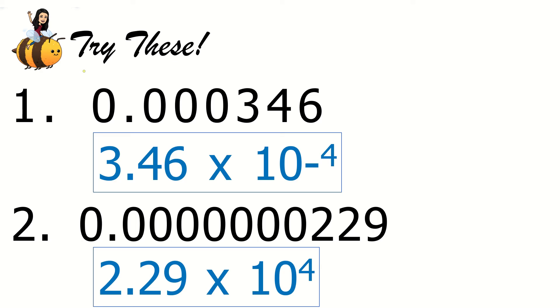Because here, it's correct that it's 2.29 and it's correct that your base is 10, but your exponent is not anymore 4. Your exponent must be 1, 2, 3, 4, 5, 6, 7, 8. So it must be negative 8. Instead of 4, you are going to write down negative 8 as your exponent. By the way, this is also an exponent, so that must be written as negative 4. Okay? Good.